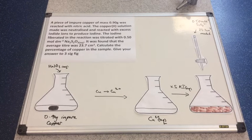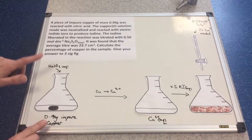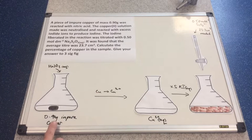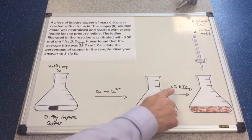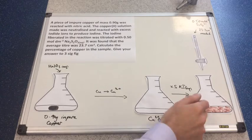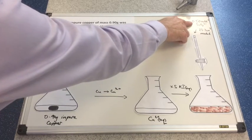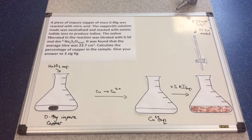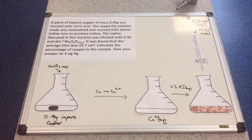We'll do one more example — I've already got the visualisation on the board. Quickly run through it, then pause the video and have a go yourself before playing on to see if you got it right. Impure copper, 0.9 grams, is reacted with nitric acid, turning the copper atoms into Cu2+ ions in a 1:1 ratio. Excess KI is added to produce iodine — that's gone brown. Thiosulfate is added via titration; concentration is 0.5 mol dm⁻³ and the average titre was 23.7 cm³. Work out what percentage of the impure copper was actually copper, to three significant figures.